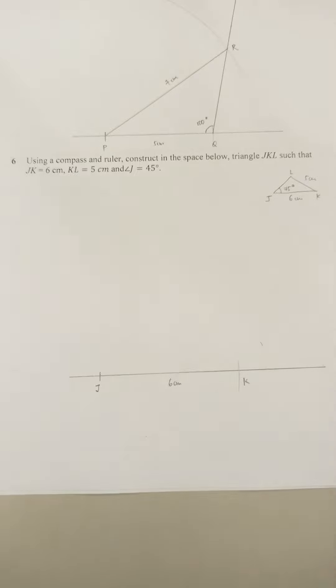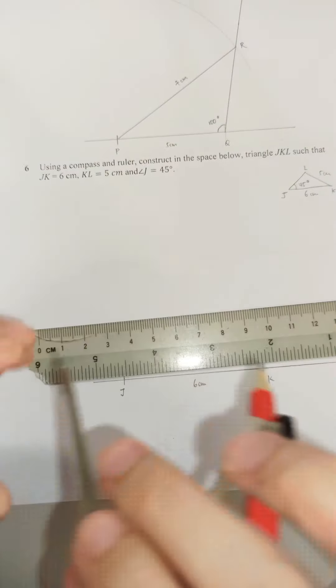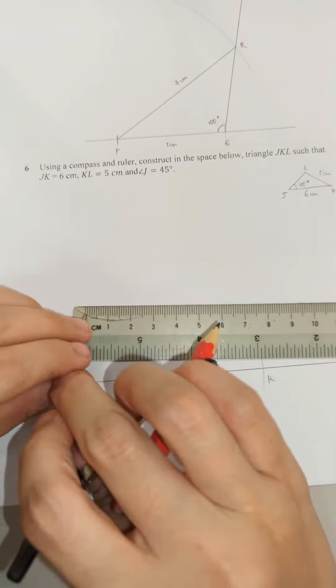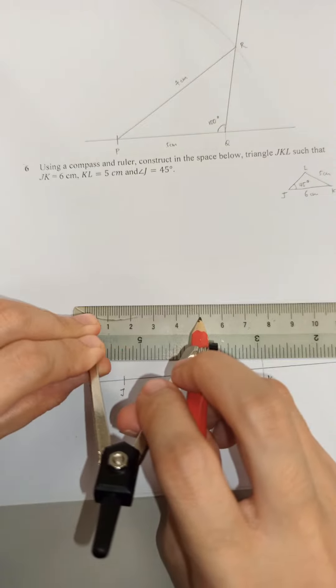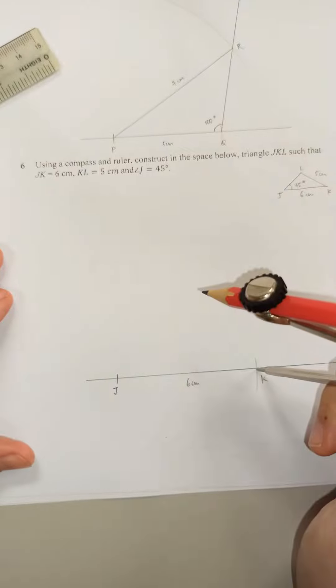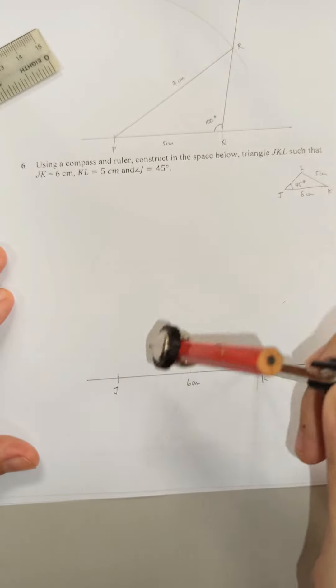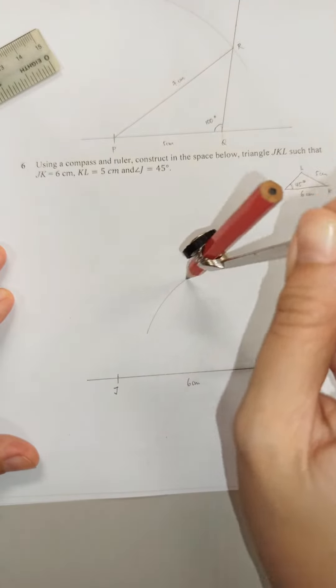Next, they give us KL is 5 cm. Let's take a look. 5 cm, 0 to 5. Put it on K. Draw my arc.